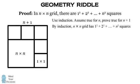By the induction hypothesis the n by n grid has a total number of squares of 1² + 2² + ... + n² number of squares. So now we need to see the number of new squares we can create by the squares we've added on.